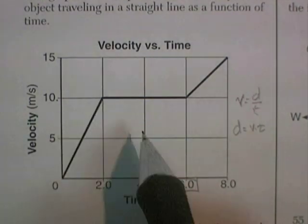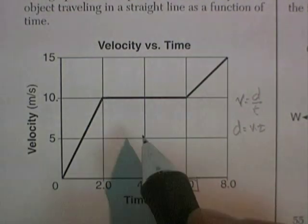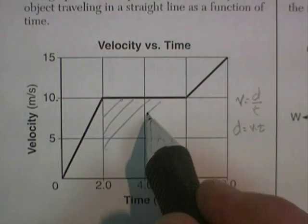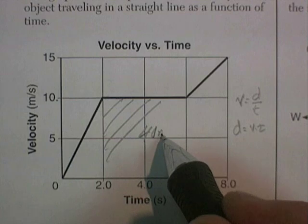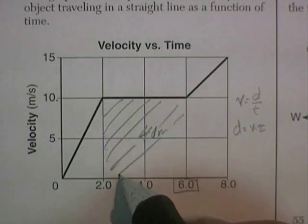If you went 10 meters per second for this amount of time, let's say 4 seconds, you would travel 10 times 4, or 40 meters. And that would be the area of this particular shape.